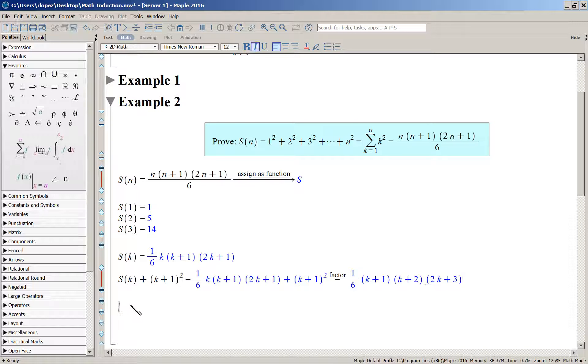How does that compare to what the next statement ought to be? Which is S of K plus one? Are they the same? One-sixth, K plus one, K plus two, two K plus three. So again, that constitutes this proof by induction. The truth of the Kth statement is used to establish the truth of the Kth plus first statement.